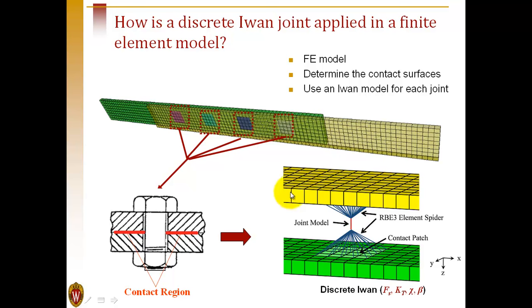We have four IWAN models, four joints, and we'll see how the response of this structure compares to a modal IWAN equivalent.